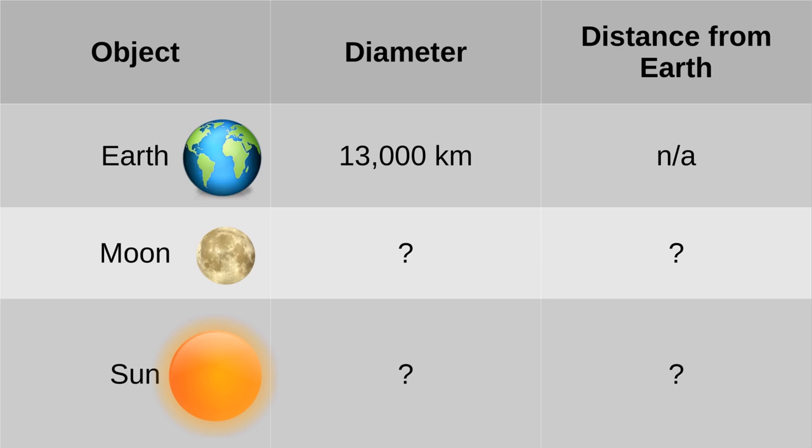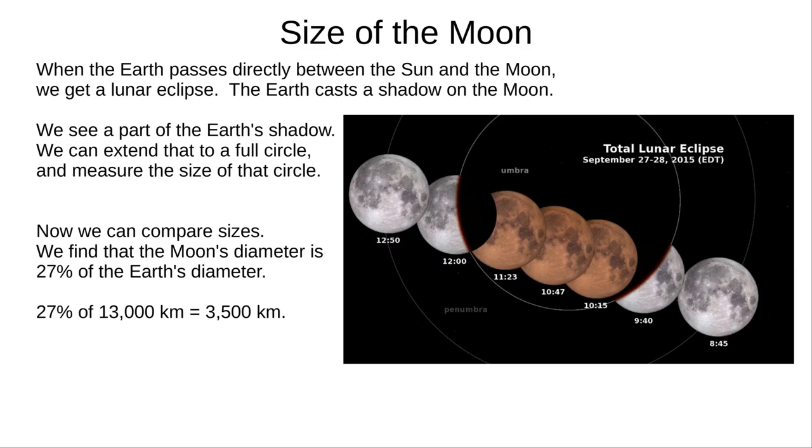So now we know the size of the earth and we can move on to figuring out the size of the moon. I'm going to show you two methods of finding this. Both of them rely on lunar eclipses. During every lunar eclipse, the earth casts a round shadow on the moon. By the way, this is how the ancients knew that the earth is spherical. A flat disc-shaped earth would sometimes cast a round shadow on the moon, but not every time.